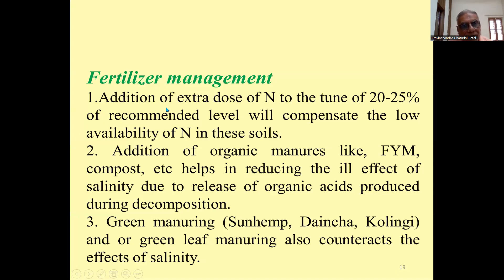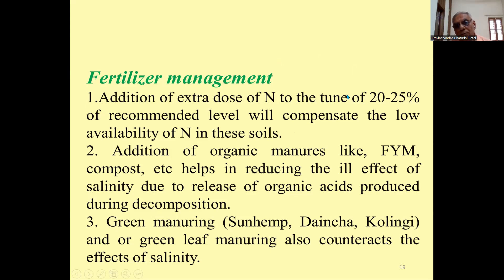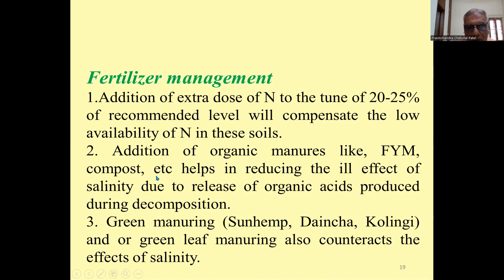Fertilizer management: additional dose of nitrogen to the tune of 20 to 25% above the recommended level will compensate for the low availability of nitrogen in saline soil. Due to the constraints of higher pH (around 8.5), we should apply 20 to 25% extra nitrogen. Addition of organic manures like farm yard manure, compost, etc., helps reduce the ill effects of salinity due to release of organic acids produced during decomposition, which reduces soil pH and makes nutrients more available to the plant.